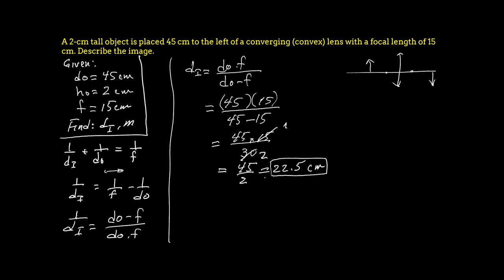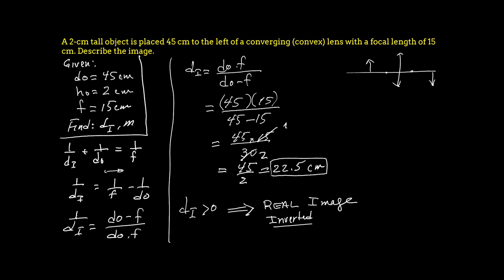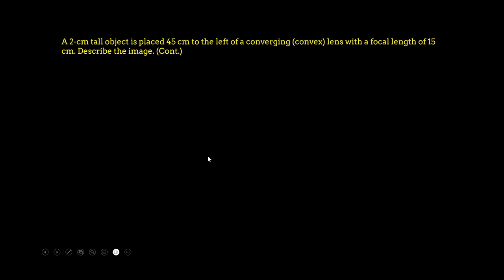So di = 22.5 centimeters. It came out positive, which means — according to the sign convention adopted from the first video — di greater than zero means the image is real and inverted. This will be further verified with the magnification.